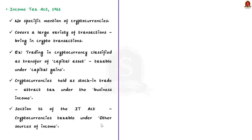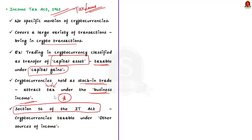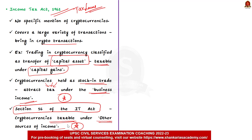Now we will discuss the tax laws in India regarding cryptocurrency. The Income Tax Act 1961 does not specifically mention cryptocurrencies, but it covers a large variety of transactions to bring crypto transactions under its ambit. For example, trading in cryptocurrency may be classified as transfer of a capital asset which is taxable under the head capital gains. And if such cryptocurrencies are held as stock in trade and the taxpayer is trading in them frequently, the same will attract tax under the head business income.